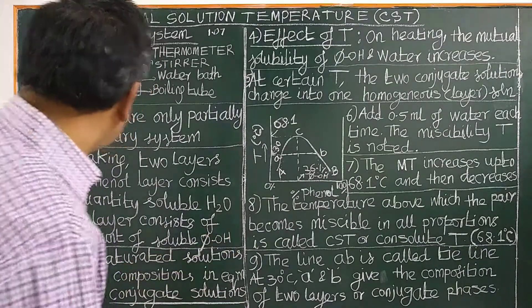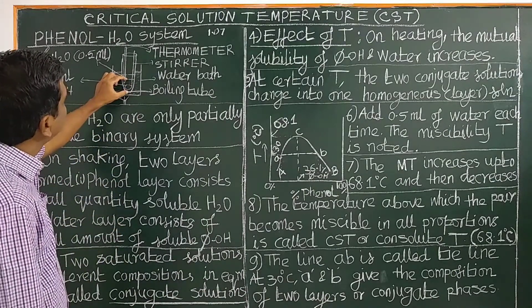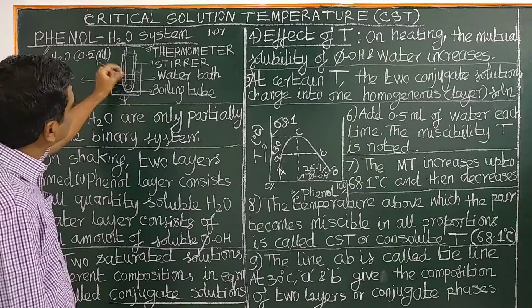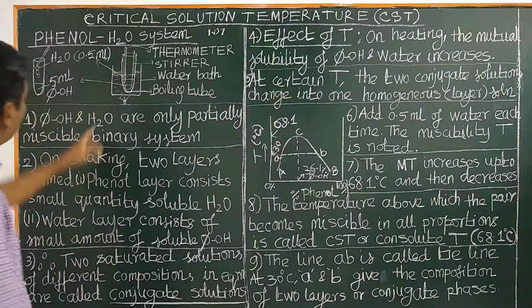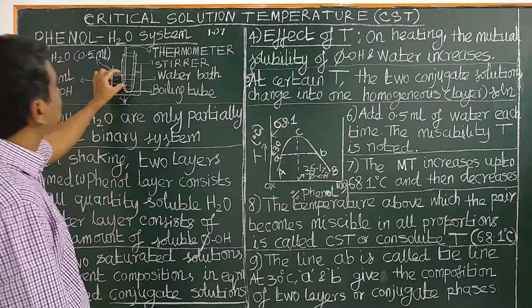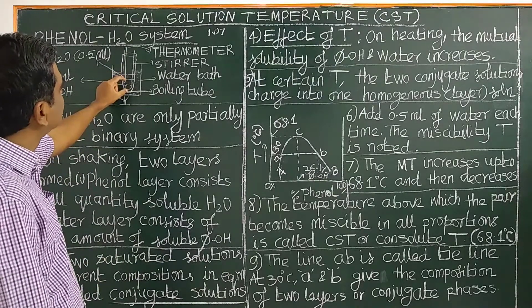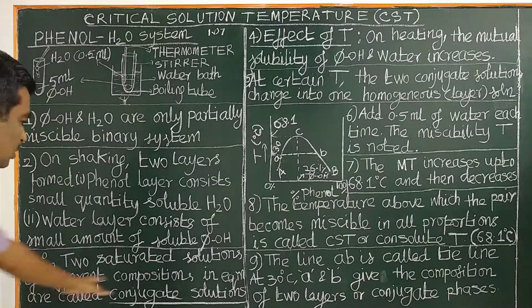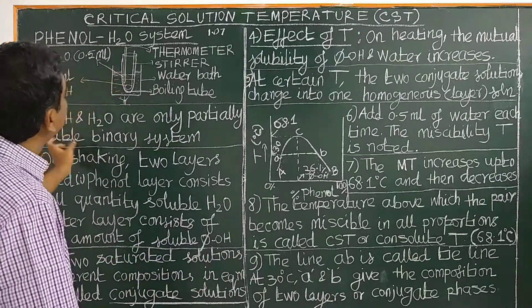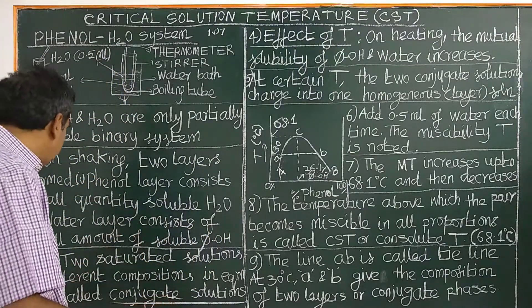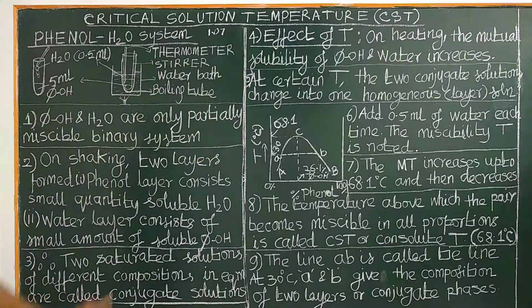Next, we will see conjugate solutions. We have two saturated solutions — the phenol layer, which is saturated with water, and the water layer, which is saturated with phenol. These two saturated solutions have different compositions: in the phenol layer, phenol is in large amount; in the water layer, water is in large amount. These two layers at equilibrium at a particular temperature are called conjugate solutions.